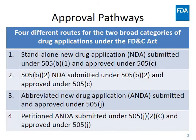There are four different routes across two broad categories of drug applications under the Federal Food, Drug, and Cosmetic Act. First is the standalone NDA submitted under Section 505B1 and approved under Section 505C. Second is the 505B2 NDA submitted under 505B2 and approved under 505C. Third is the ANDA submitted and approved under 505J. And finally, the petitioned ANDA submitted under 505J2C and approved under 505J.